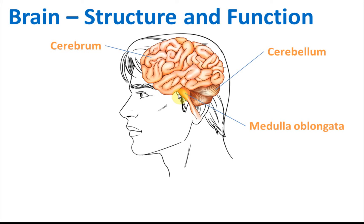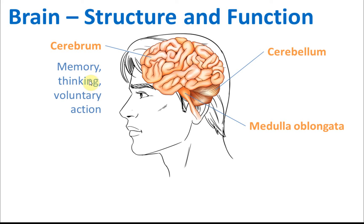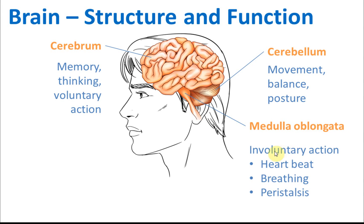The functions of these three parts of the brain are very different. For the cerebrum, the function is memory, thinking, and voluntary action. For the cerebellum, it is for movement, balance, and posture. And the medulla oblongata is for involuntary actions.